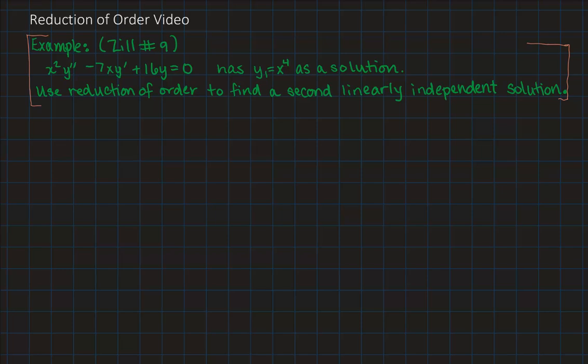Greetings! We're going to look at this example from the textbook number 9, starting with a homogeneous linear differential equation x squared y double prime minus 7xy prime plus 16y equals 0.